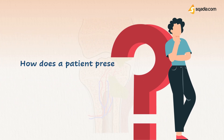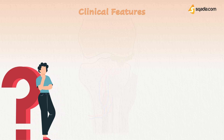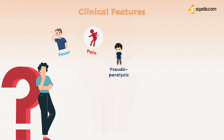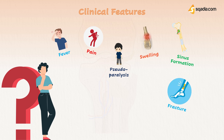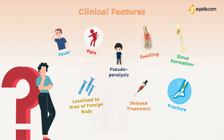Now let's talk about the clinical features — how does a patient present with osteomyelitis? Firstly, there will be fever and pain. Since children are infected most often, one way to identify pain is by the child not moving the affected limb, known as pseudoparalysis. Later on, as infection builds, soft tissue swelling may occur, and in some cases sinus formation may also occur. A pathological fracture may also be seen. A delay in initial treatment may develop a risk for chronic osteomyelitis. The infection may also be localized to a foreign body, such as a surgical nail or debris from trauma.